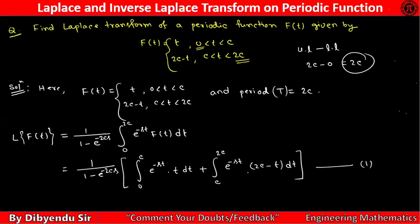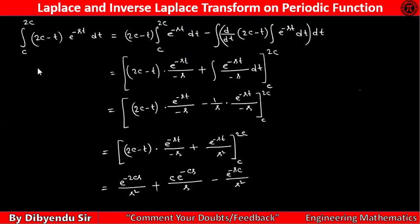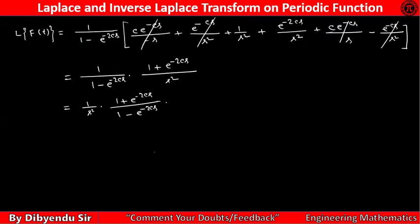Hello everyone, this is a correction video. In my last lecture on Laplace and inverse Laplace transform of periodic functions, in this problem I have done a calculation mistake. The first integration part result is correct, and the second integration part result is also correct, but here I have done a mistake — this sign should be a negative sign.